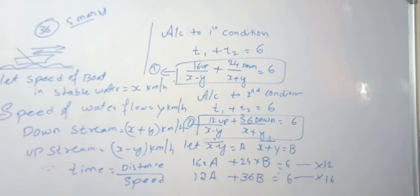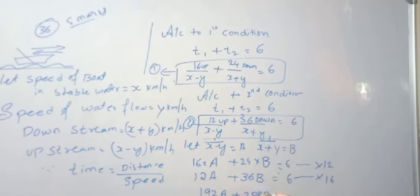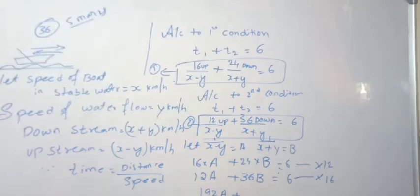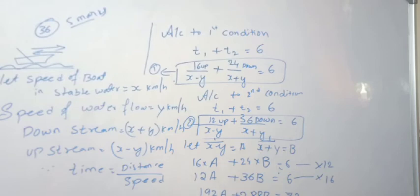Multiply equation 3 by 12 and equation 4 by 16. This gives: 192a plus 288b equals 72, and 192a plus 576b equals 96.